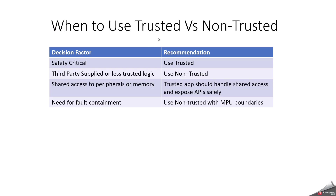Now, when to use trusted and non-trusted OS application: if you have a safety-critical requirement, we recommend using trusted OS application. When you have third-party supplied or less trusted logic, you can use non-trusted OS application. When it comes to shared access to peripherals or memory, the trusted application should handle shared access and expose APIs safely. And when there is a need for fault containment, you can use non-trusted with MPU boundaries.